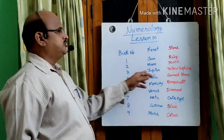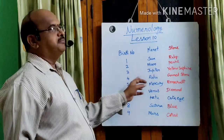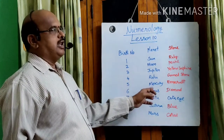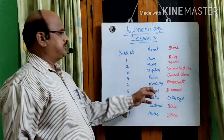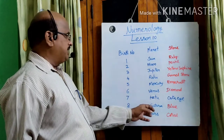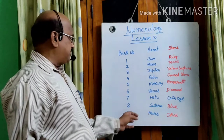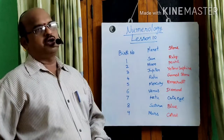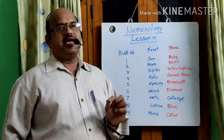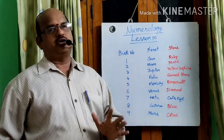For example: 3 corresponds to Jupiter, 4 to Rahu, 5 to Mercury — knowledge, 6 to Venus — love and passion, Ketu signifies 7, Saturn signifies 8, and Mars represents 9 in numerology. Therefore, each planet has some significance on each number in numerology.